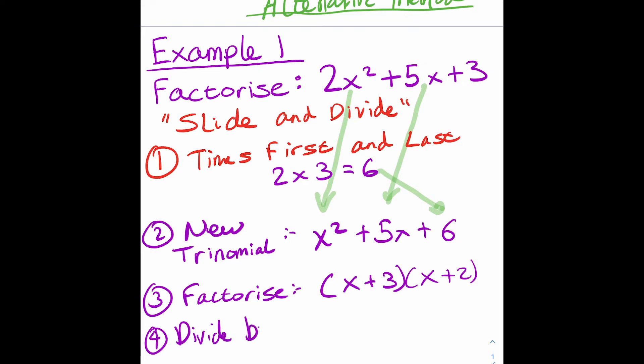The next step is the weird step. We now need to divide the numbers inside those brackets by what we times by to start with. In other words, we need to divide by 2. So we end up with x plus 3 over 2, x plus 2 over 2.